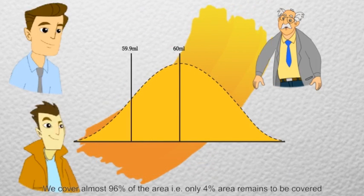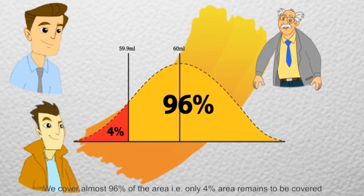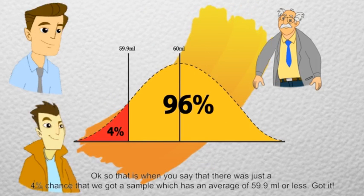That is, only 4% area remains to be covered. Okay, so that is when you say that there was just a 4% chance that we got a sample which has an average of 59.9 ml or less. Got it.